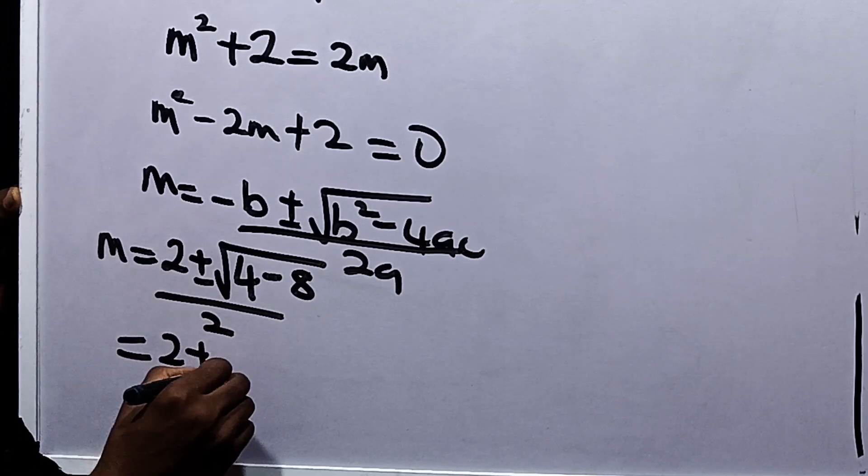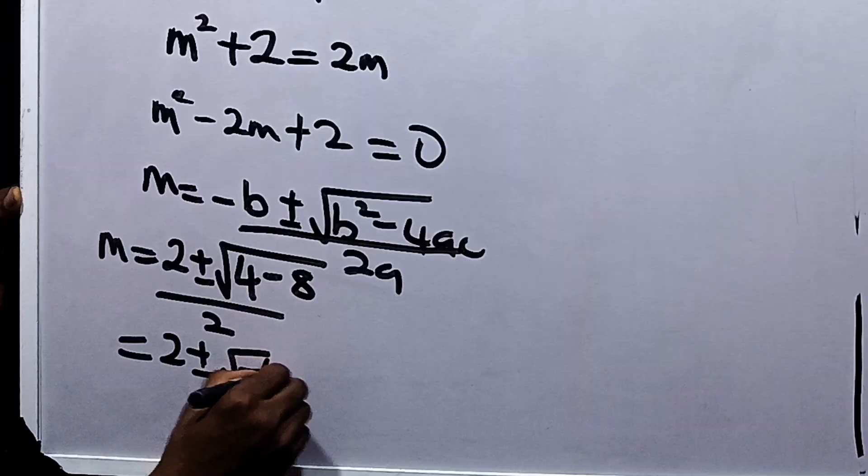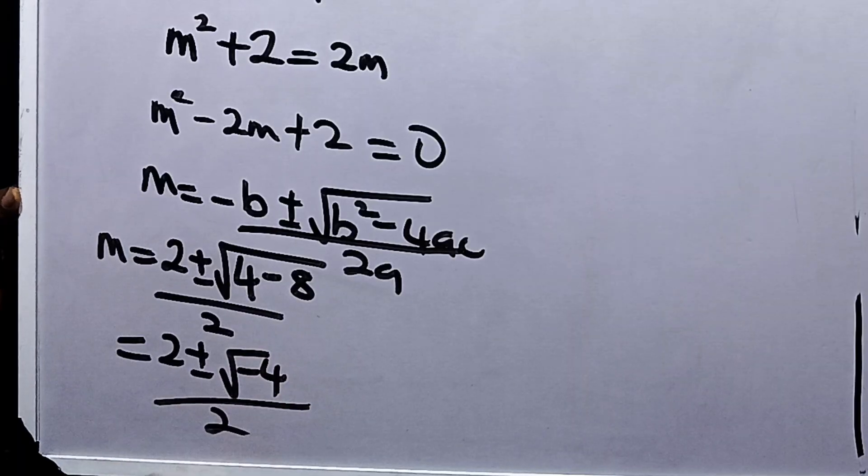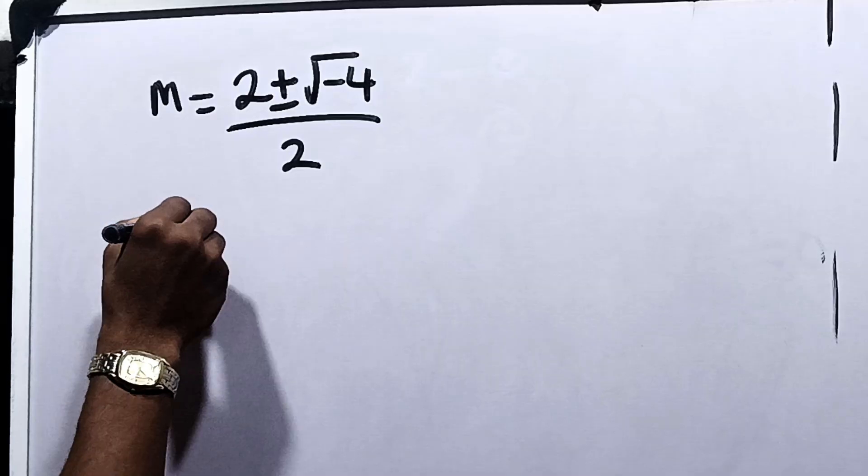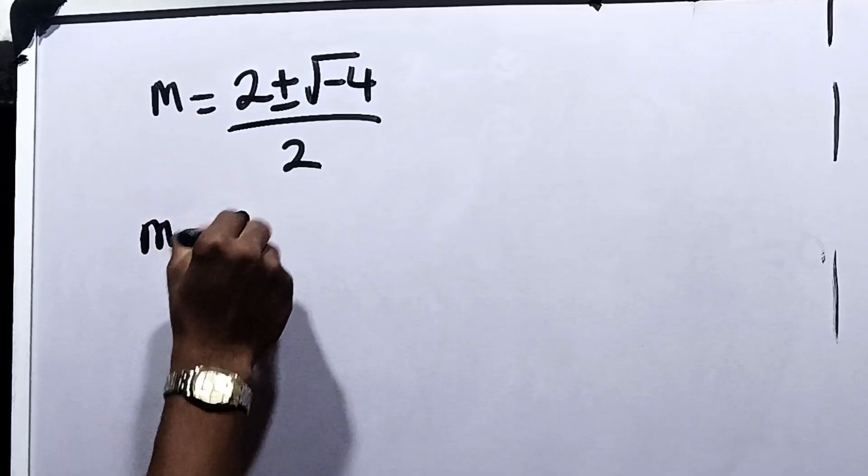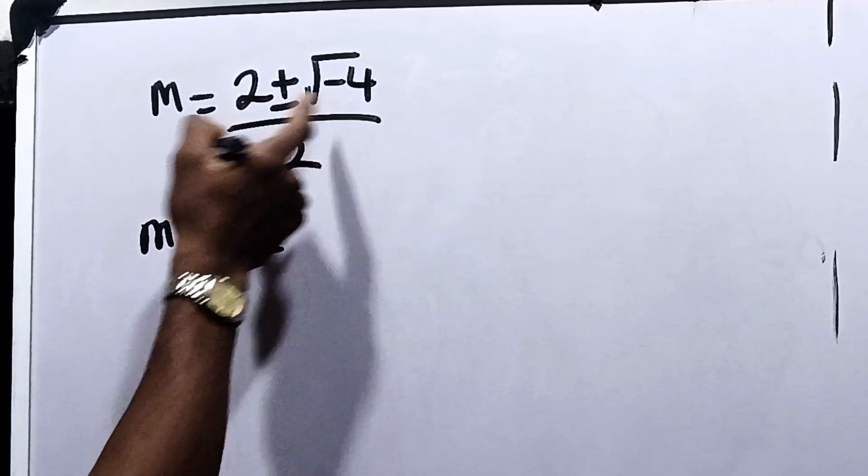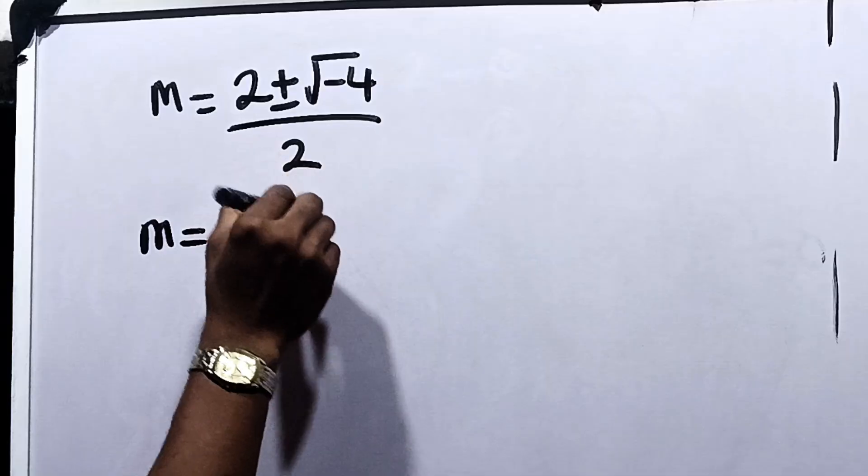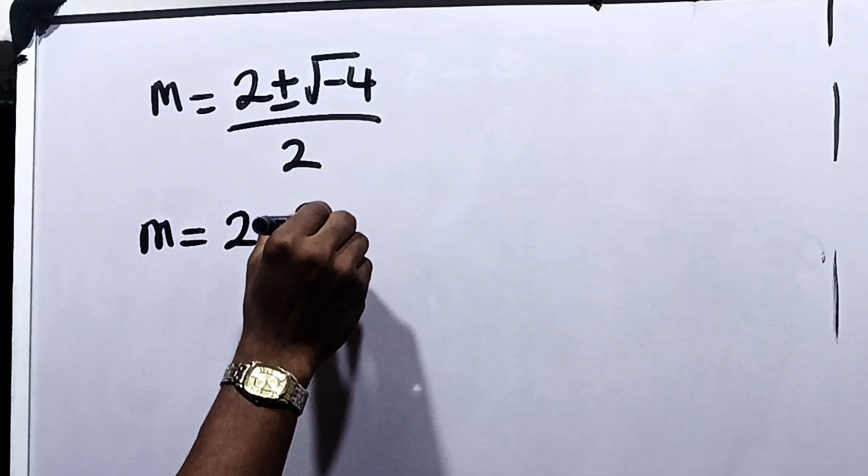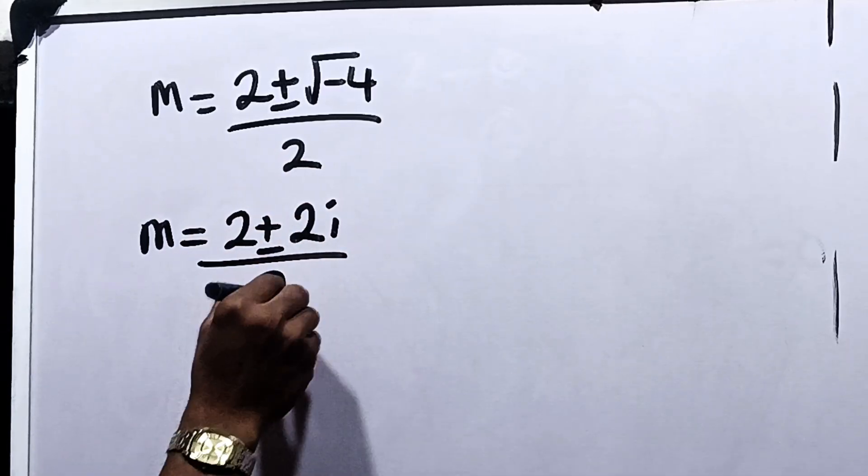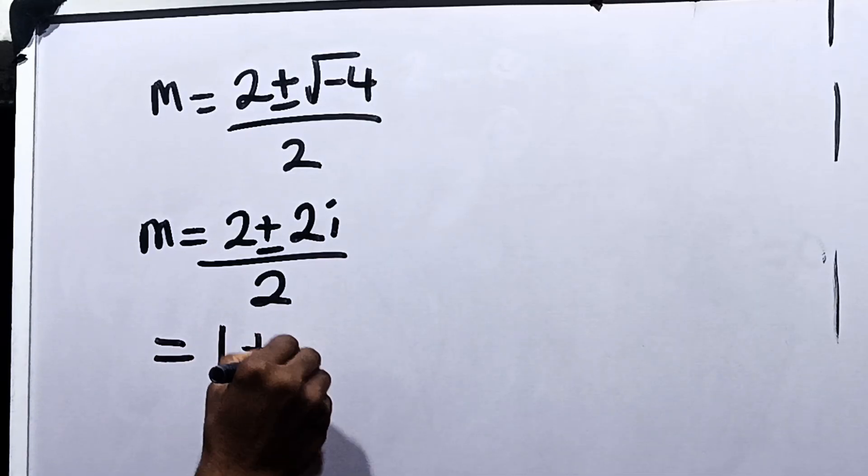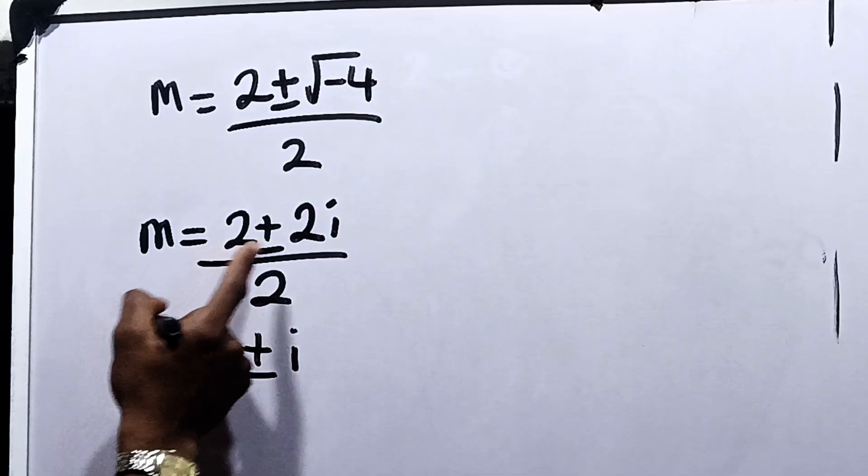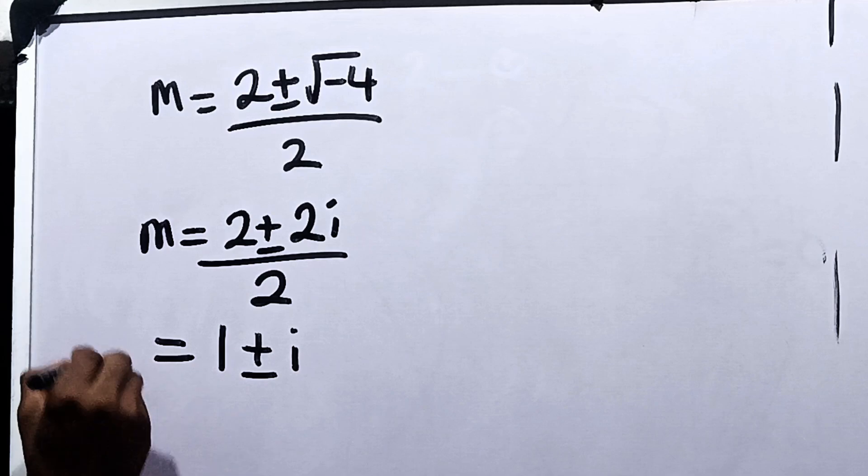So we now have that m becomes equal to 2 plus or minus root of negative 4 all over 2. Moving on from here, we have 2 plus or minus root of 4 times i, which is 2i, all over 2. So m becomes equal to 1 plus or minus i.